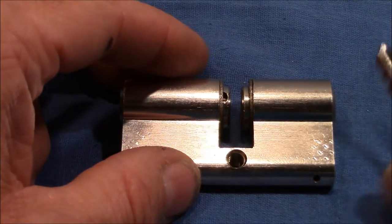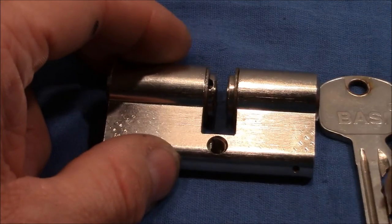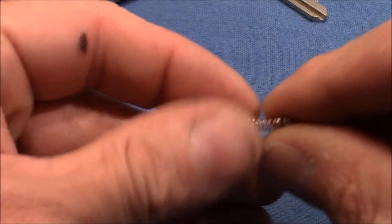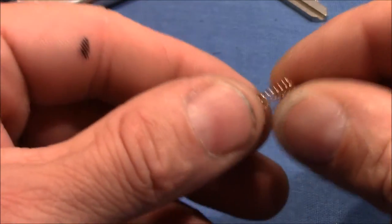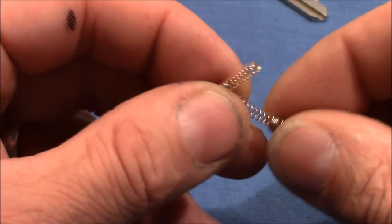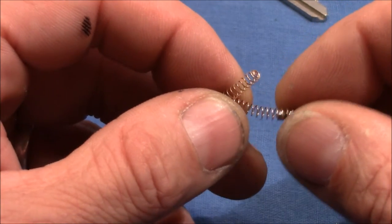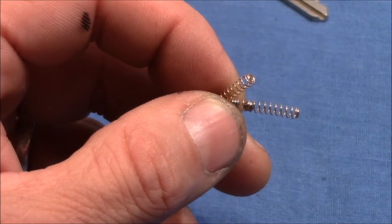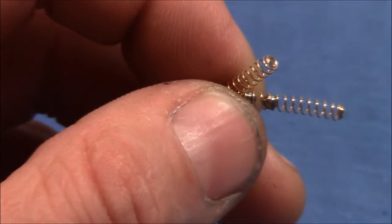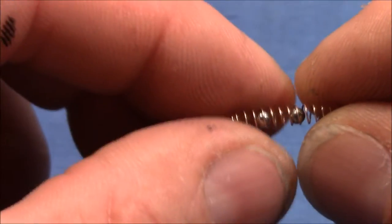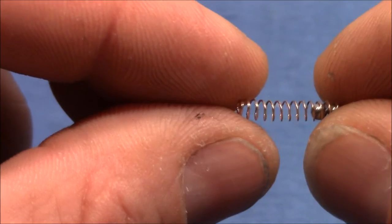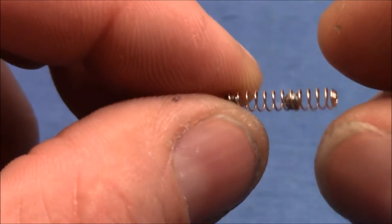But when I dumped out the springs, the big surprise came. As you can see, two springs have metal balls in them. The two stacks with the standard pins have springs with metal balls, and I've never seen that before. I was thinking what this might be good for, and the only impact in my eyes that this could have to an opening attack of this lock is bumping.